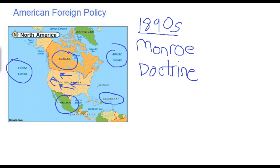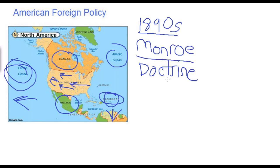The American Navy was also growing significantly during this period and wanted to gain control over forward operating bases in the Caribbean and Pacific as a way of supporting America's commerce with Central and South America and East Asia. Finally, there was a growing emphasis on a more militaristic enforcement of the Monroe Doctrine — using military force to prevent European nations from establishing new colonies or interfering with newly independent nations of the Western Hemisphere.